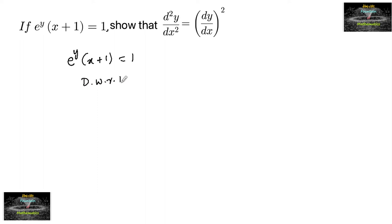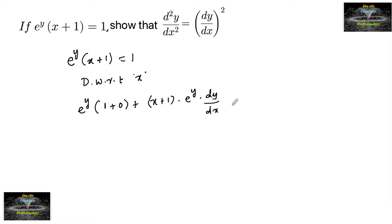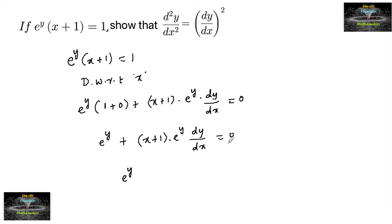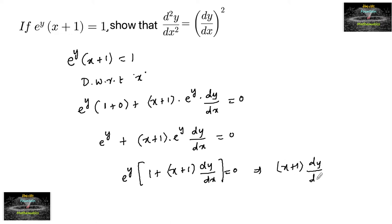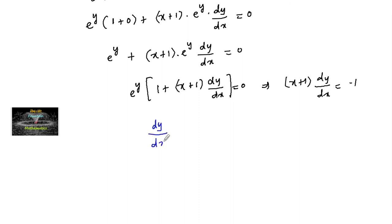Let's differentiate with respect to x. We have e^y into differentiation of (x+1), which is 1, plus (x+1) times differentiation of e^y, which is e^y · dy/dx, equals 0. So e^y [1 + (x+1) · dy/dx] = 0. Since e^y cannot equal 0, we get (x+1) · dy/dx = -1, so dy/dx = -1/(x+1).